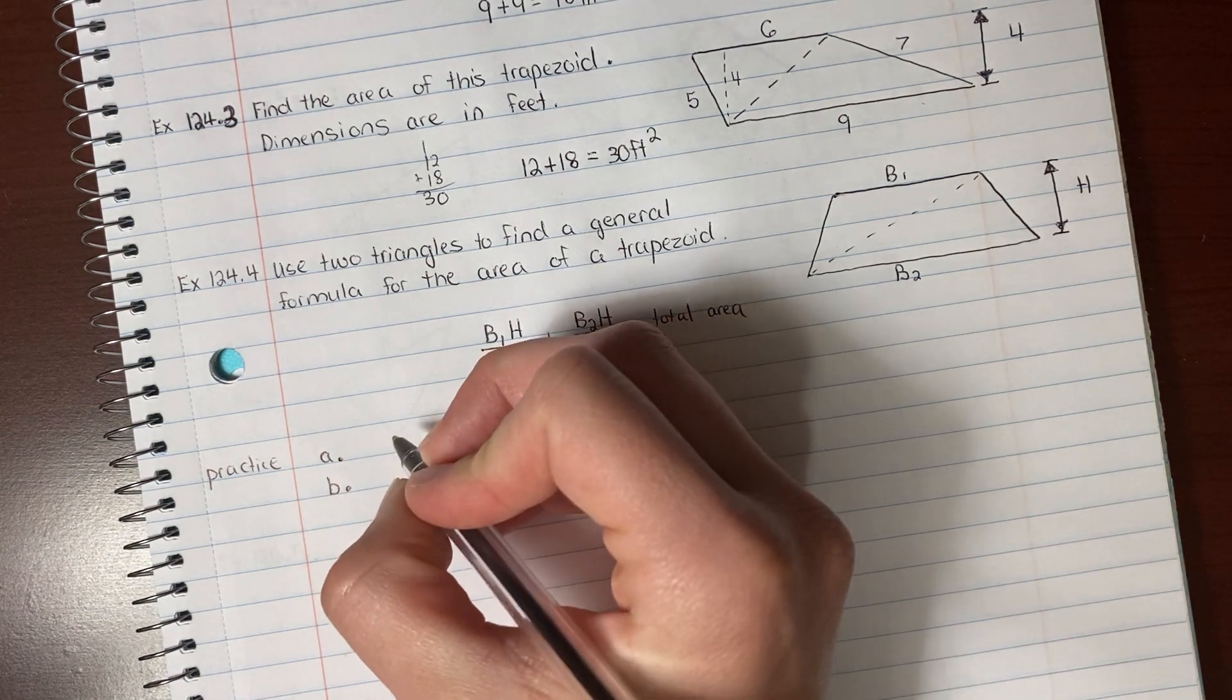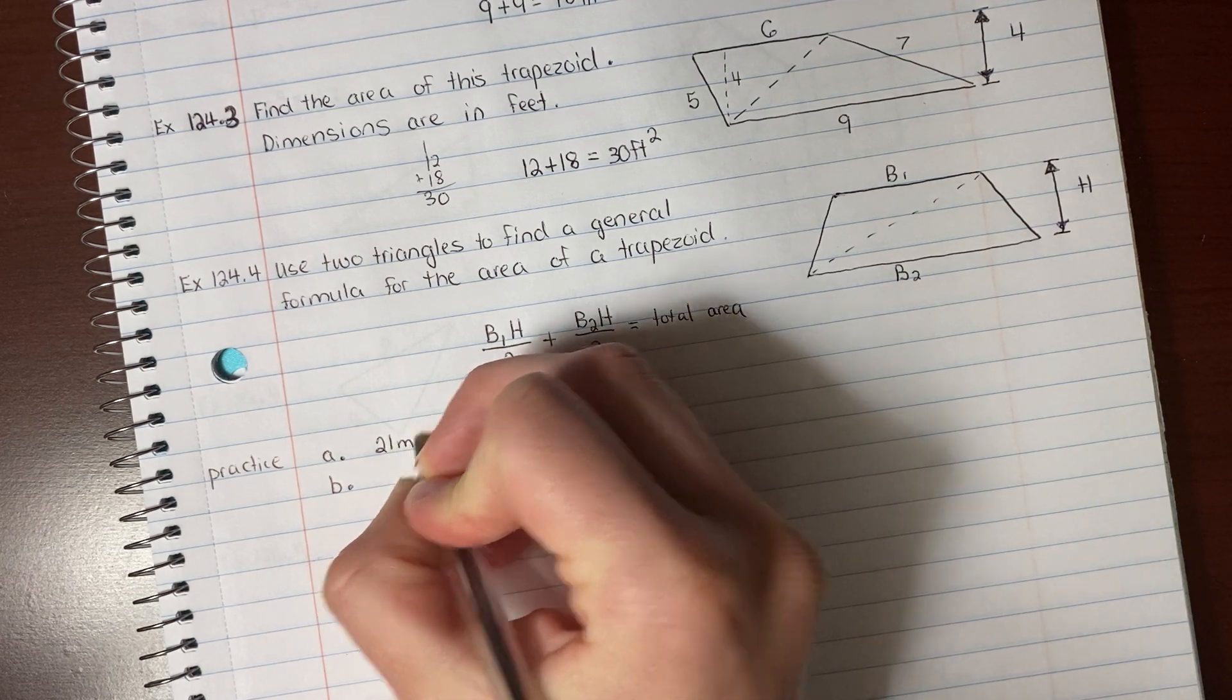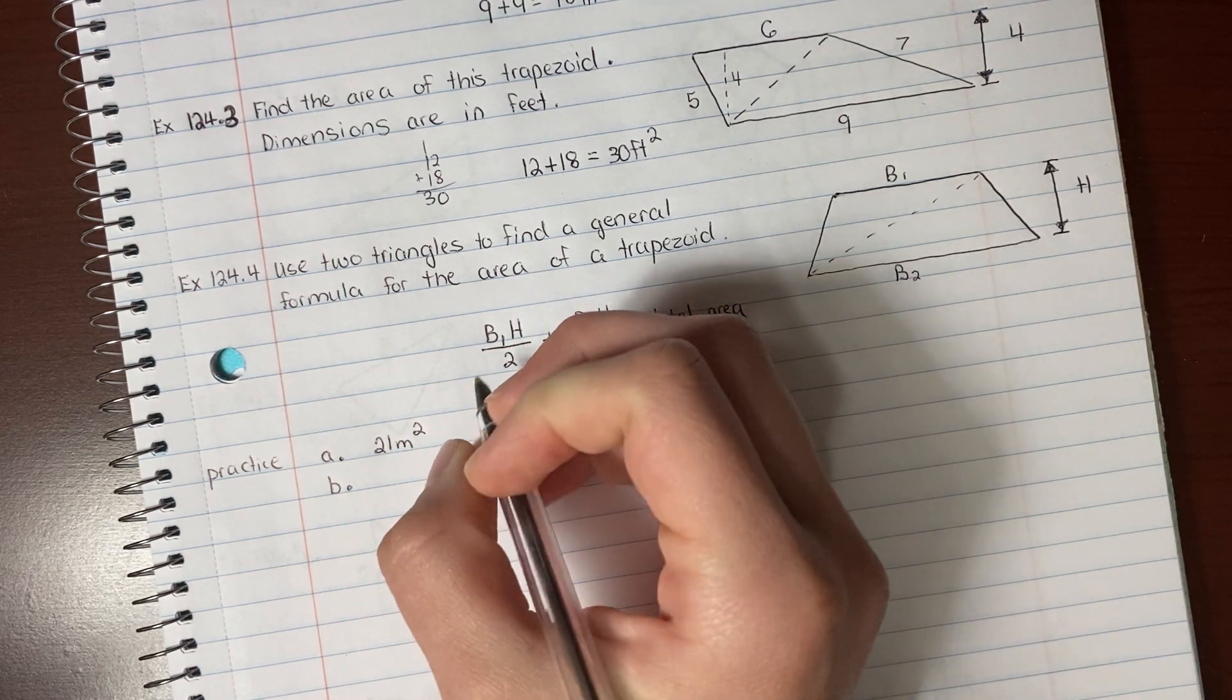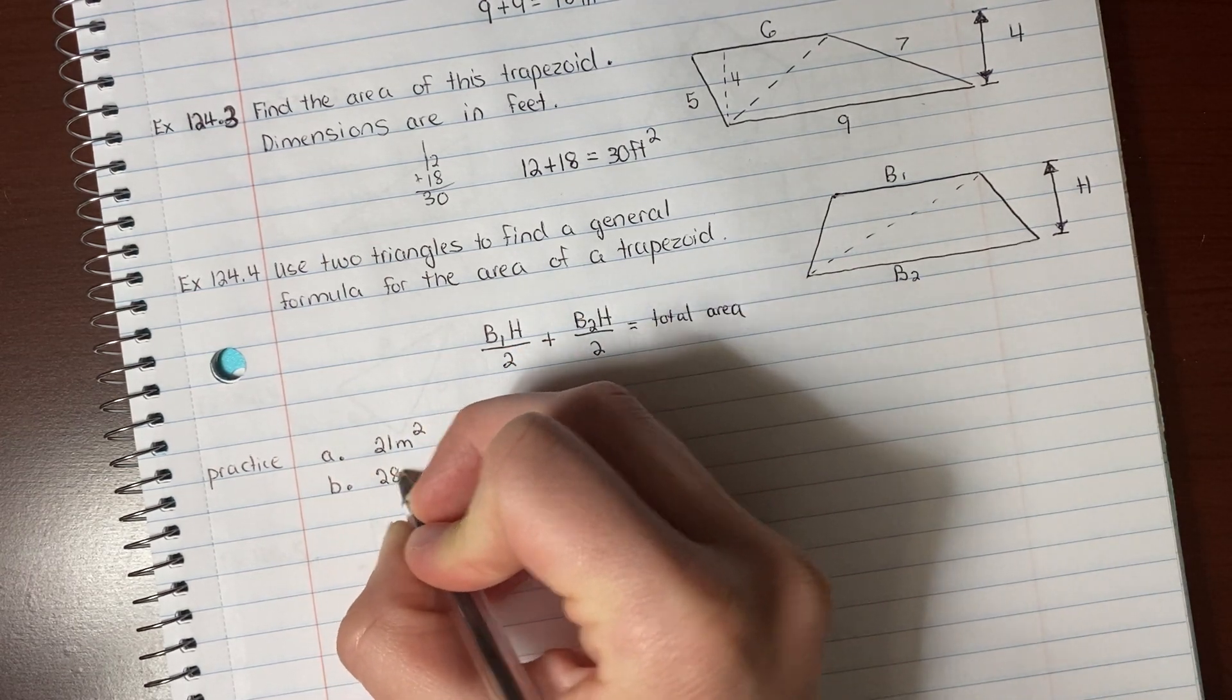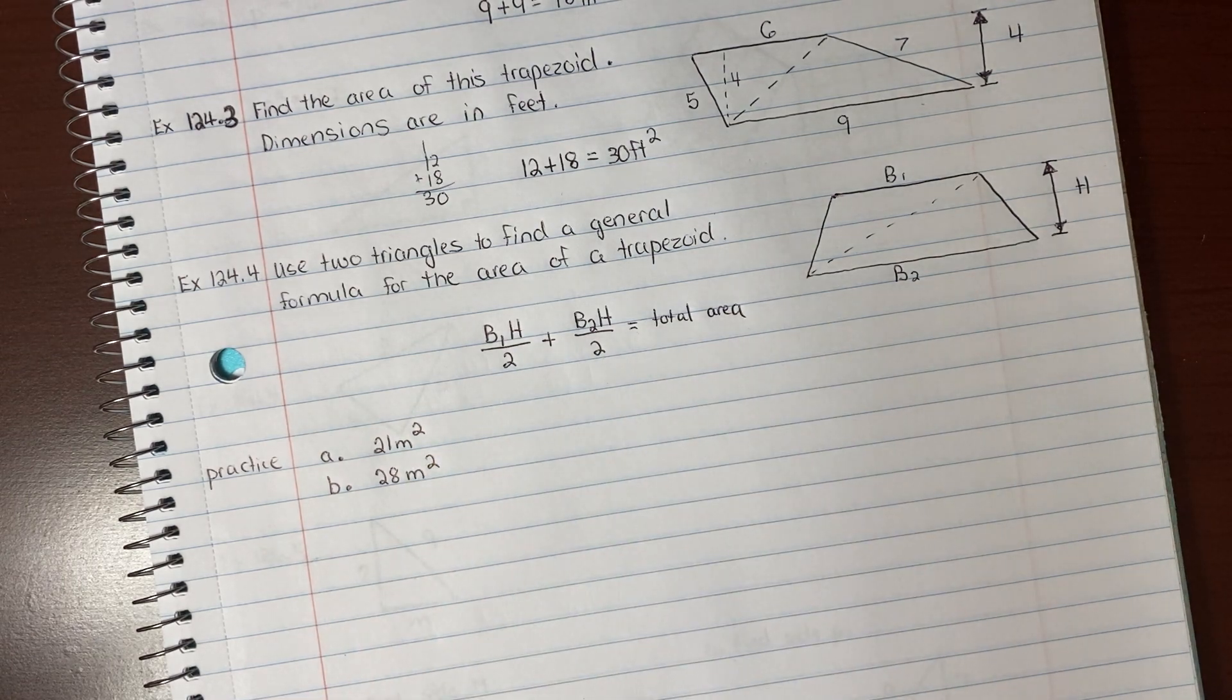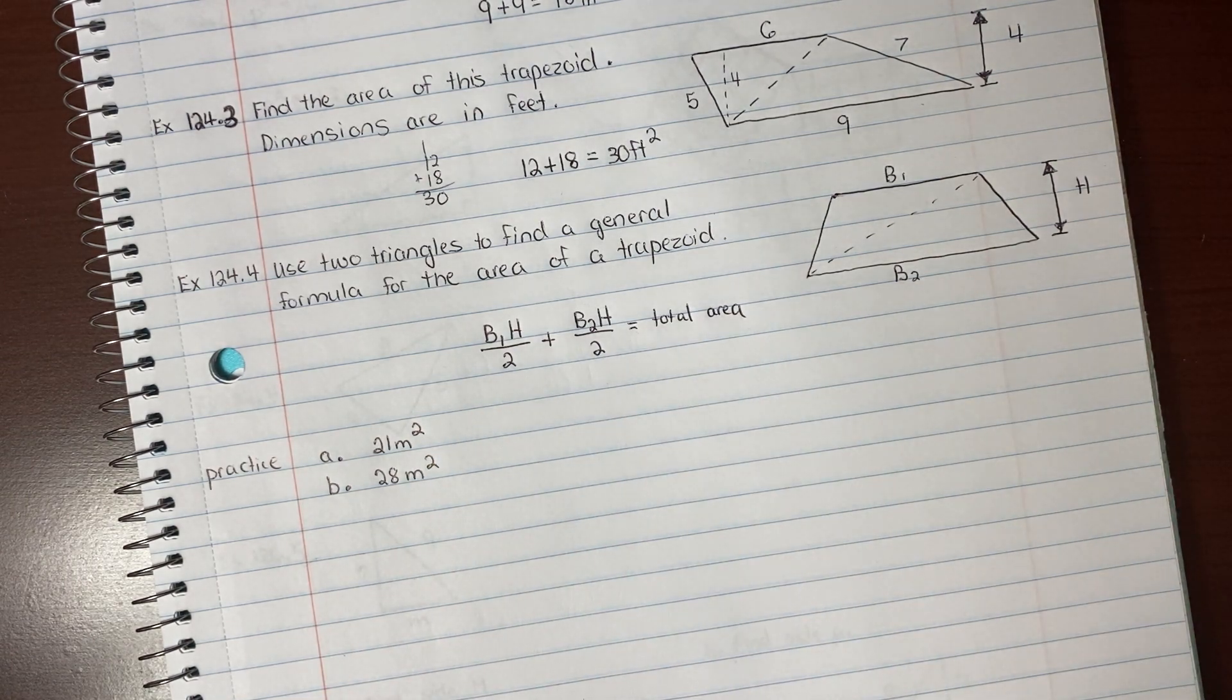I'm assuming you've done these. Letter A is 21 meters squared. And B is 28 meters squared. There's lesson 124.